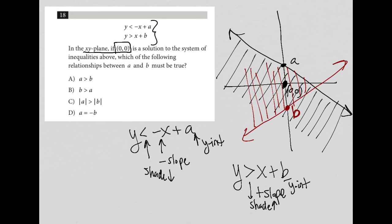So when I look at my answer choices, choice A says that a is greater than b. Well, that is definitely true. So I like that answer. B being greater than a, that would not work out.